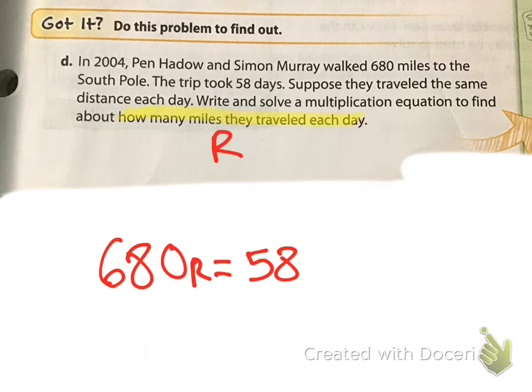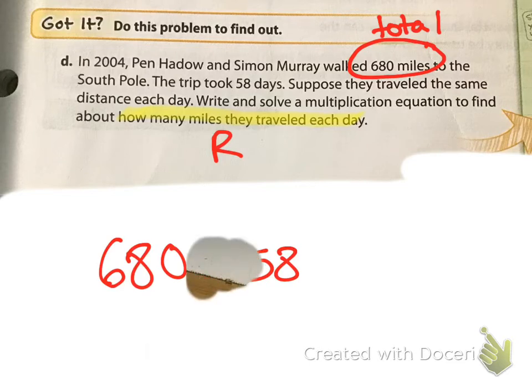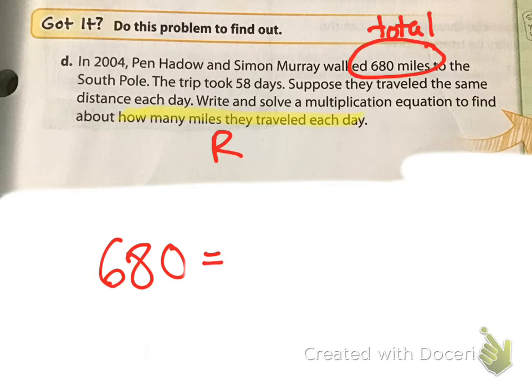Now, here, they walked 680 miles over 58 days. What is my equation going to look like? Oleg, can you tell me? We had this written down as a guess: 680R is equal to 58. How do we know that that's not right? Lily says 680 is bigger than 58. That's true, but based on reading this problem, what is it, Lucy? This we know is our total. So, because we know it's our total, it should be on the other end all by itself. So, since it's our total, it should be 680 is equal to.